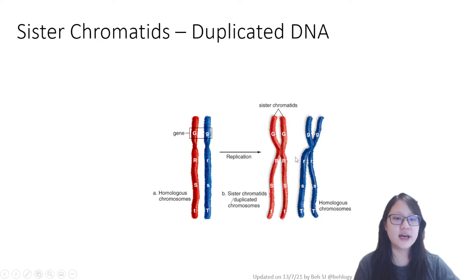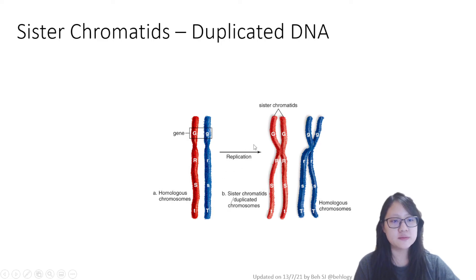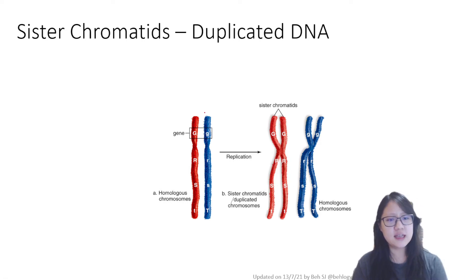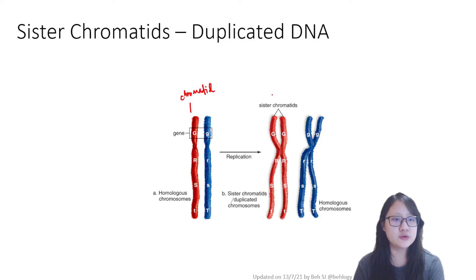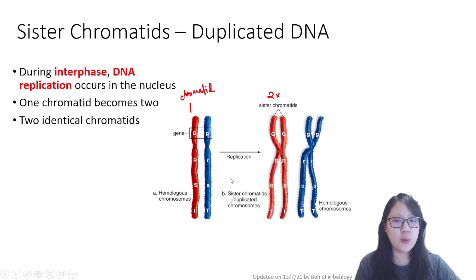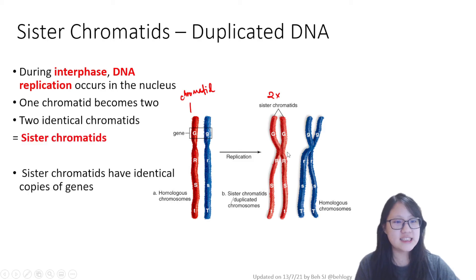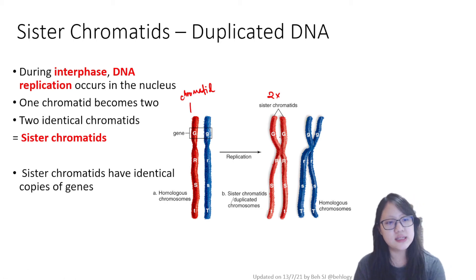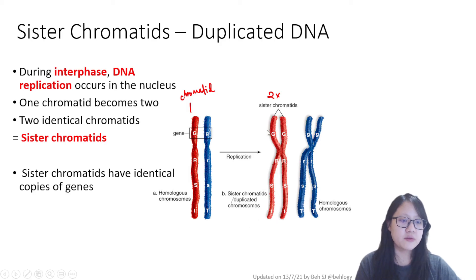We sometimes see chromosomes as chopstick-shaped and sometimes as butterfly-shaped. This chopstick form is before replication. After replication, chromosomes are visible in the form of sister chromatids. This is one single chromatid; after duplication they become sister chromatids — two copies of that chromatid. This happens during DNA replication during interphase, which we will discuss more next video. Sister chromatids are called sister because they are identical and have identical copies of genes — for example, big G, big G; big R, big R; big S, big S; small T, small T — both sides are the same.